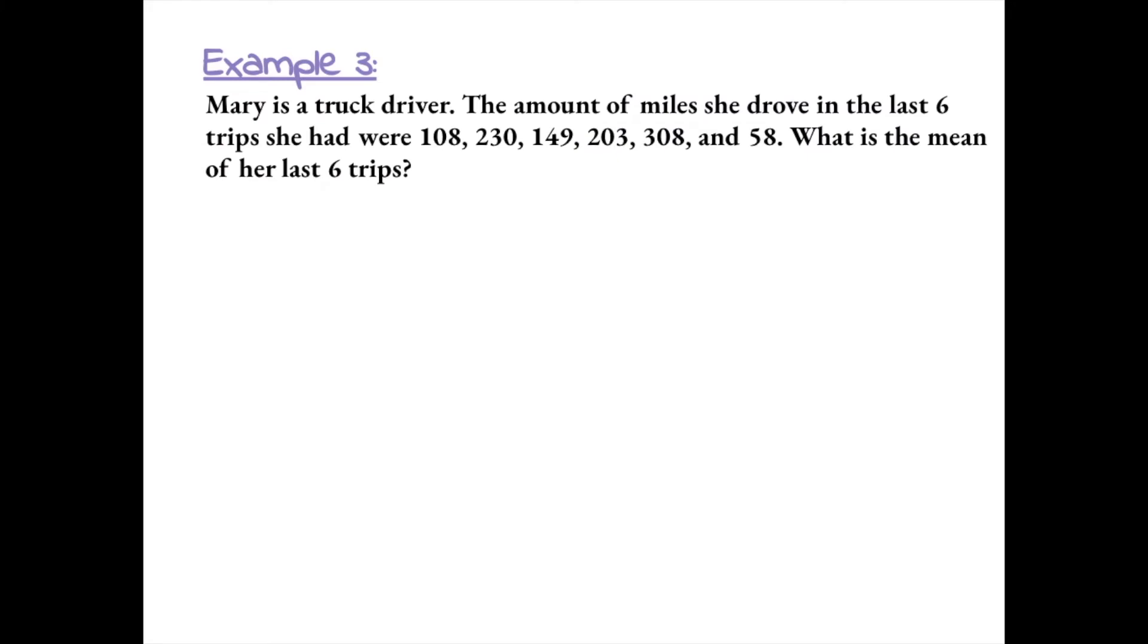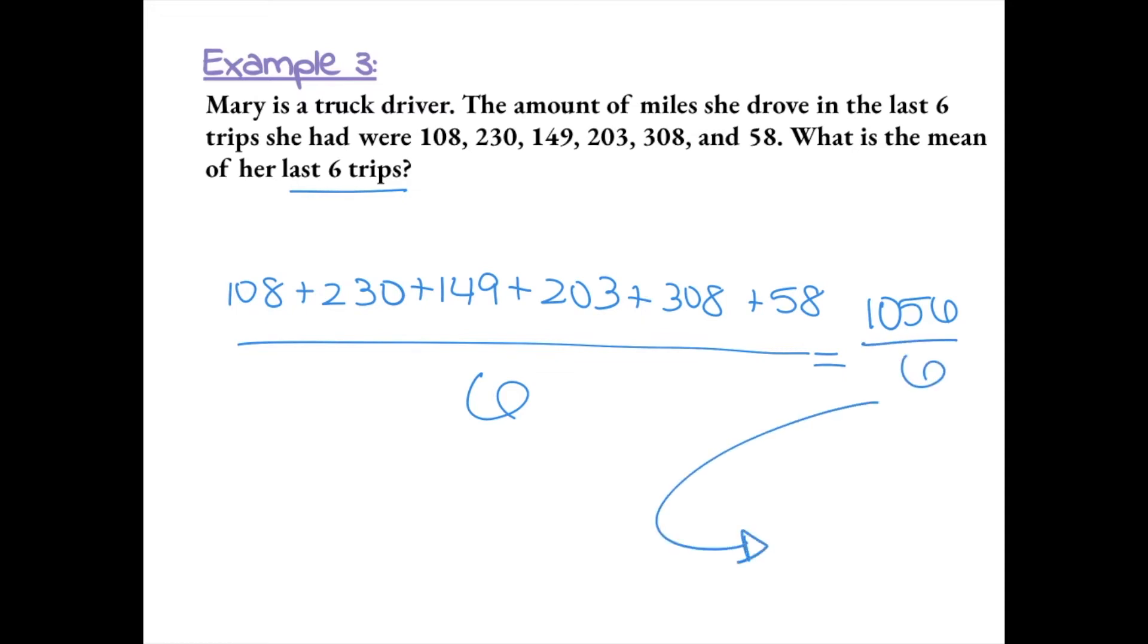Example 3, Mary is a truck driver. The amount of miles she drove in the last 6 trips she had were the following numbers. What is the mean of her last 6 trips? So we need to find the sum of all of the numbers. Next, we need to divide that sum by the number of trips that she took. We could count and see that there are 6 trips and we can also see that it says 6 trips in the problem. The sum of all of these numbers equal 1056, so next we would divide that by 6. And that equals a mean of 176.